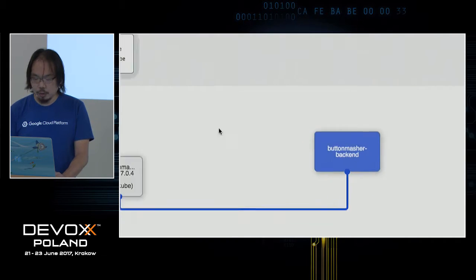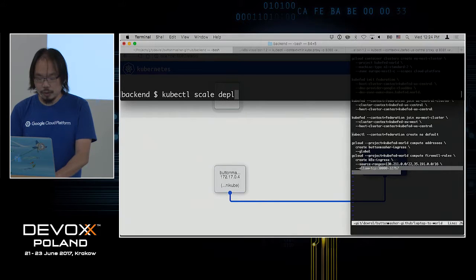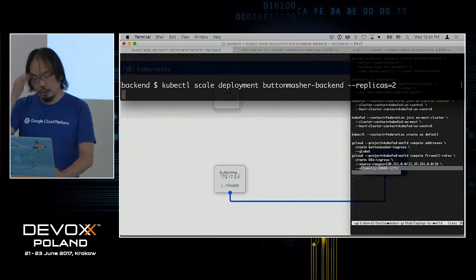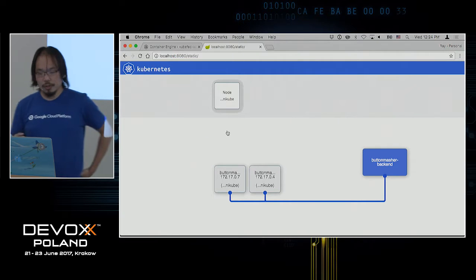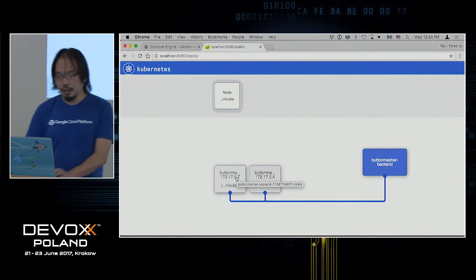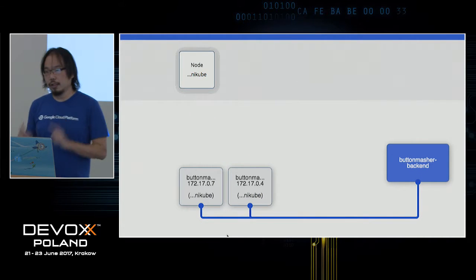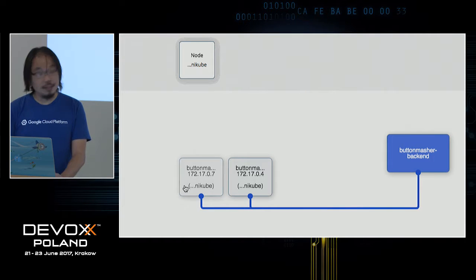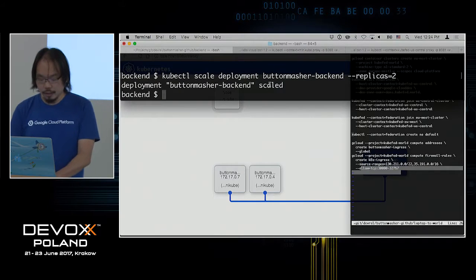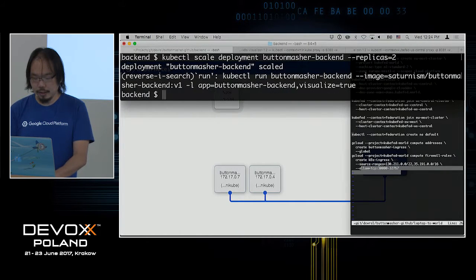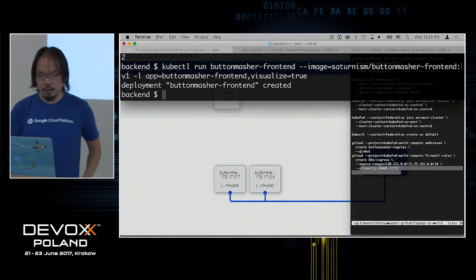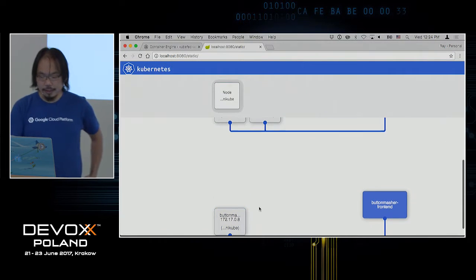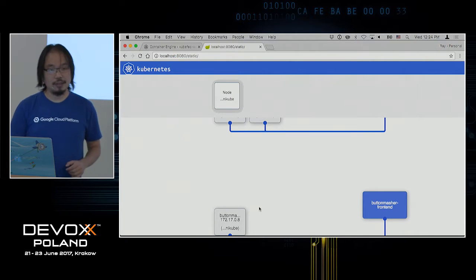Now I've got one application up and running, one instance, controlled by Kubernetes. I can scale this if I want. I can say kubectl scale deployment button-masher-backend — I can scale this up to, say, two. Kubernetes will see it has one instance and needs two, find a machine with capacity, and start up another instance. Because this cluster only has one machine, every instance is running on the same machine right now. I can deploy the frontend the same way.